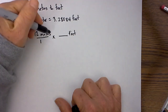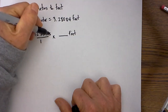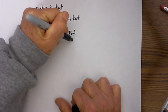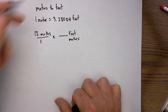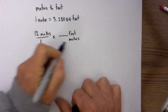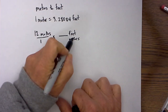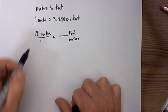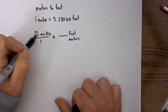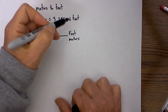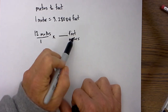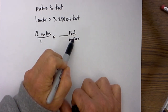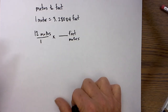What is given I place on the bottom. Let's recap: I have placed 12 over 1, I have put the unit of measure I would like to go to on top, and I place what I have been given on the bottom.